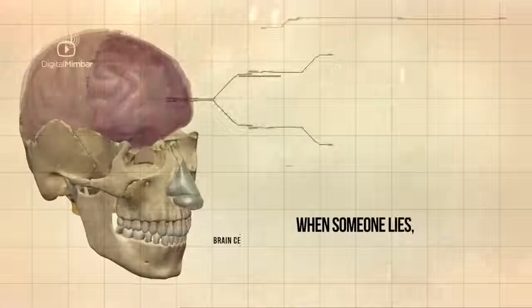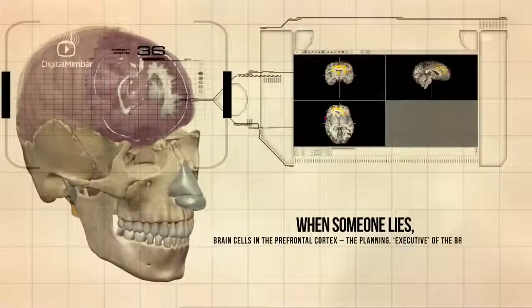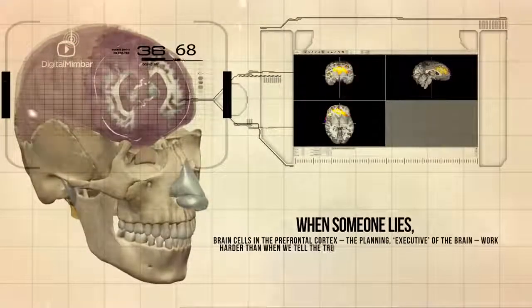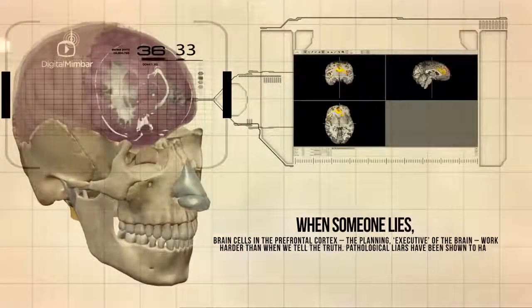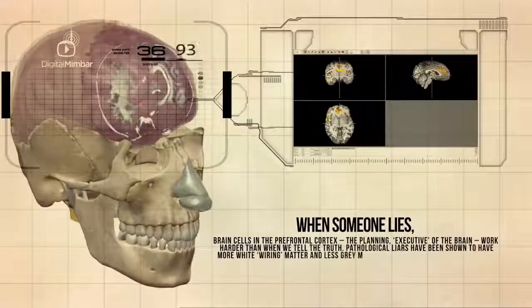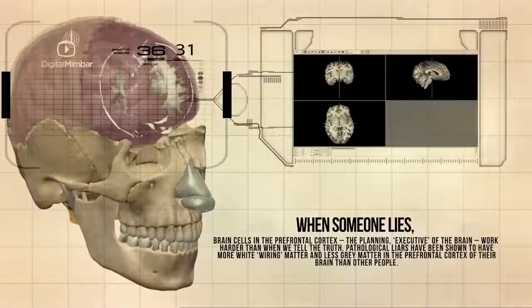When someone lies, brain cells in the prefrontal cortex, the planning executive of the brain, works harder than when we tell the truth. Pathological liars have shown to have more white wiring matter and less grey matter in the prefrontal cortex of the brain than other people.